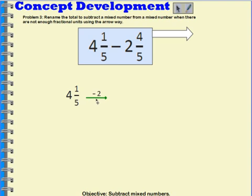And then the first thing I'm going to do is I'm going to subtract my two wholes. So that would be 4 and 1 fifths minus 2. And I'm going to take the 2 from the 4. So that would mean I would have 2 and 1 fifths left over.